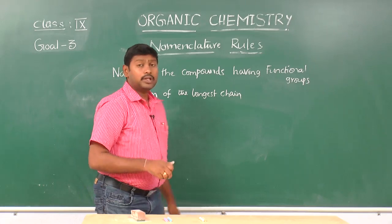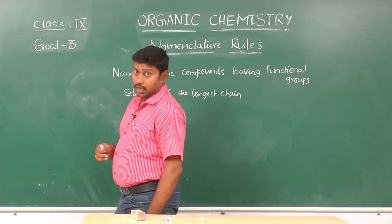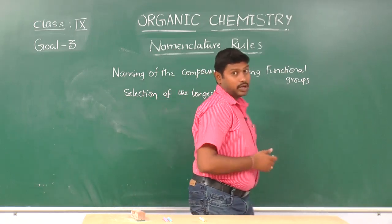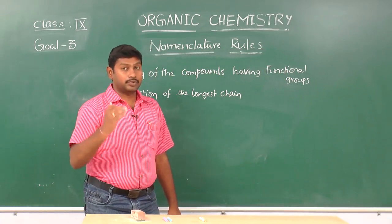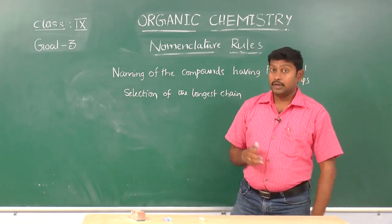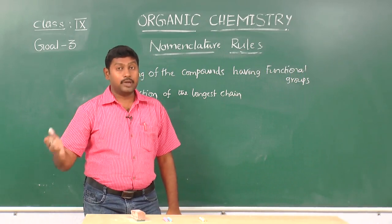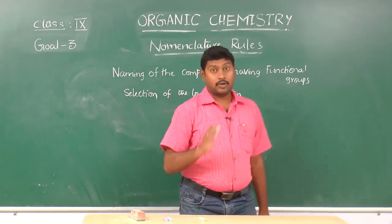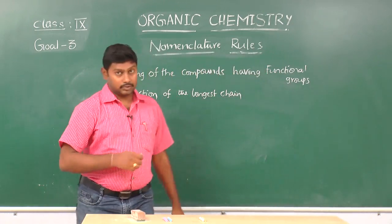If more than one functional group is present in the compound, we should select the longest continuous carbon chain such that it includes all the functional groups. Our longest continuous carbon chain must have all the functional groups when more than one functional group is present. Let us see one example.